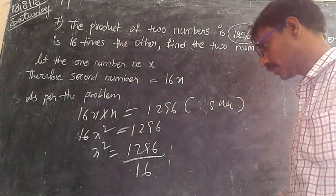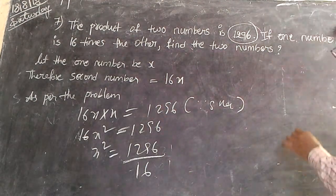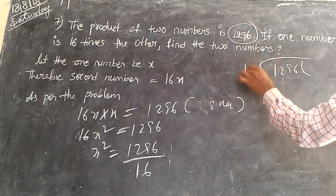You divide it first. 1296 divided with 16.